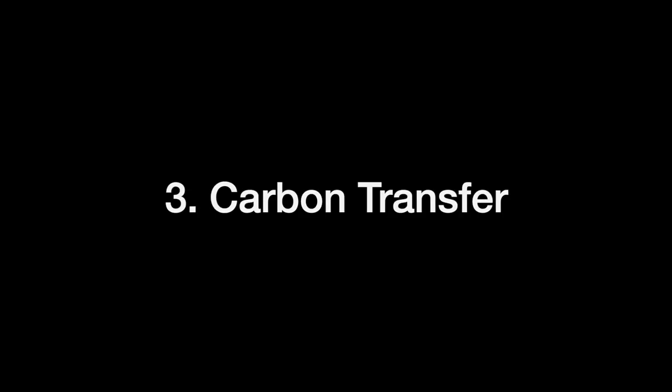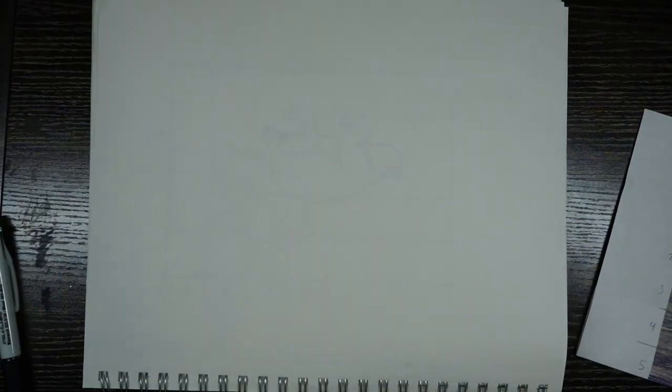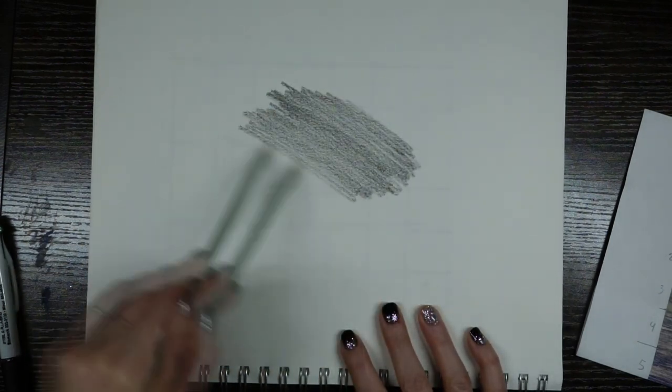Our next transfer method is called the carbon transfer method. We can use it in conjunction with a grid drawing, a regular sketch, or a photograph — which is a contentious issue we'll need to talk about. Before that, let's talk about how the carbon transfer works. You'll need two sheets of paper: one would be a sketch page and the second, the same size, would be your final artwork. You'll complete your drawing on the sketch paper, which allows you to make mistakes and revise before moving on to the final page.